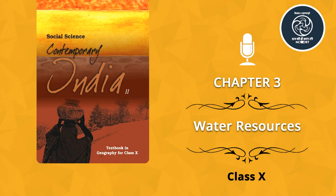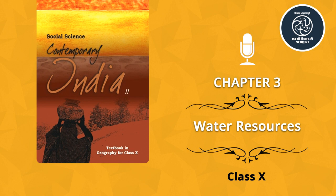From the box: A dam is a barrier across flowing water that obstructs, directs or retards the water, often creating a reservoir, lake or impoundment. The term 'dam' refers to the reservoir rather than the structure. Most dams have a section called a spillway or weir over which water flows intermittently or continuously. Dams are classified according to structure, intended purpose or height. Based on structure and materials, dams are classified as timber dams, embankment dams or masonry dams. According to height, dams can be categorized as large, medium height or high dams.